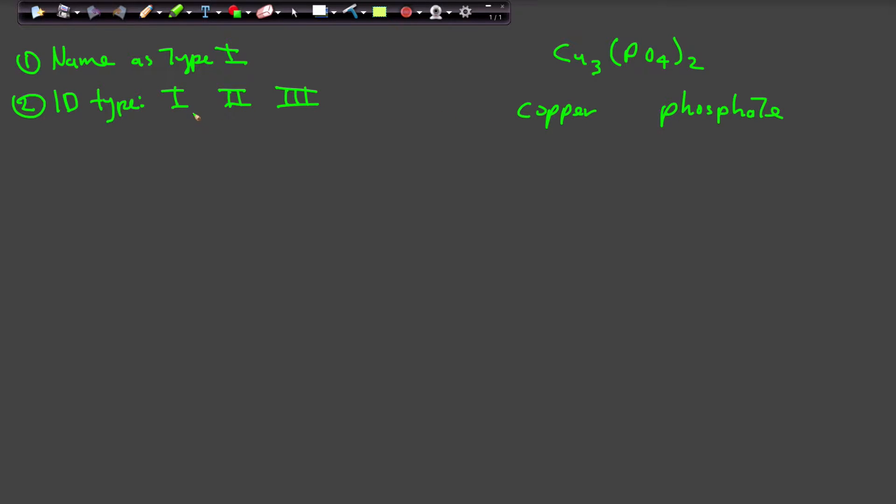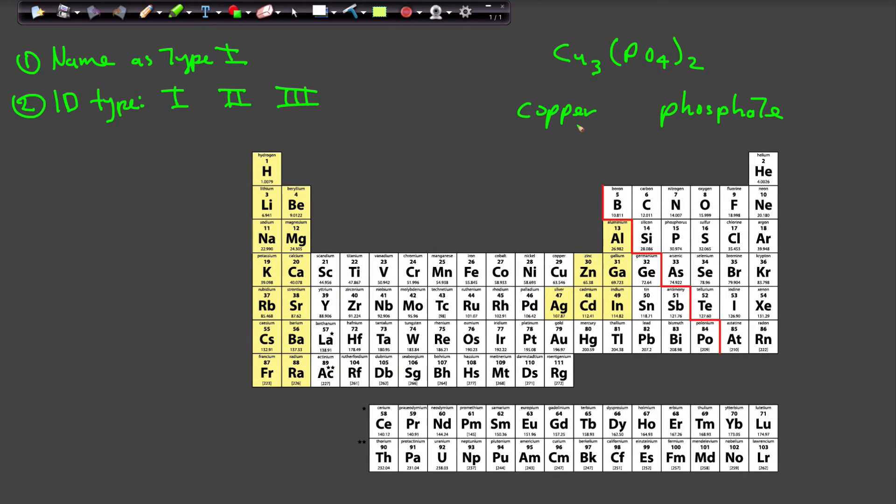You determine if it's a Type 1 by determining if it has a metal, and if that metal is a Type 1 metal, then you're going to use the Type 1 rule. Recall from class what a Type 1 metal is.